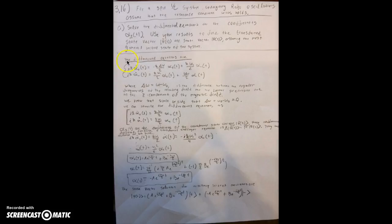From our book, we see the differential equations are this, where delta omega is equal to omega minus omega naught. This is the difference between the angular frequencies of the rotating field and the Larmor precession due to the z-component of the magnetic field. We know that omega equals omega naught, so delta omega has to be equal to zero.